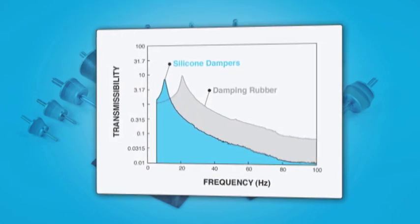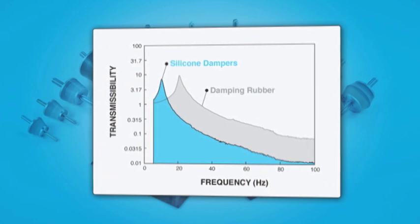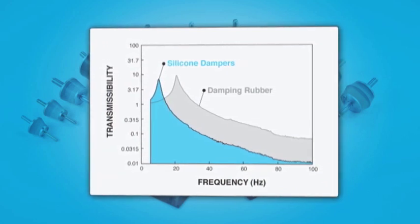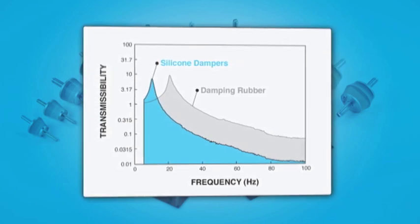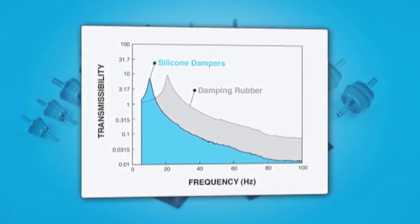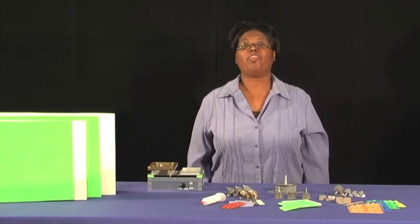Silicone gel is also superior in damping vibration compared to natural rubber. A typical transmissibility graph shows the low resonance point and the superior damping characteristics of silicone gel.